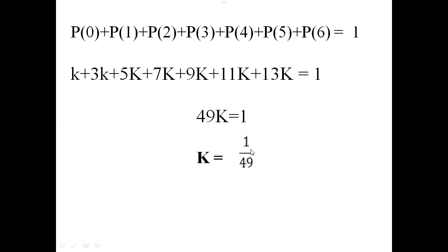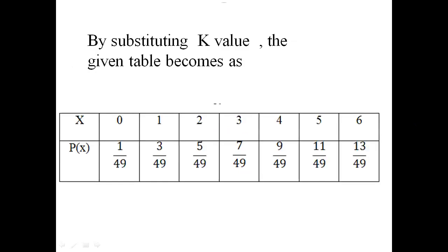We are getting K = 1/49. Now the next required value is the distribution function. Before going to the distribution function, K is substituted in the given table. By substituting K = 1/49, the probabilities become: 1/49, 3/49, 5/49, 7/49, 9/49, 11/49, and 13/49 for events 0 through 6.